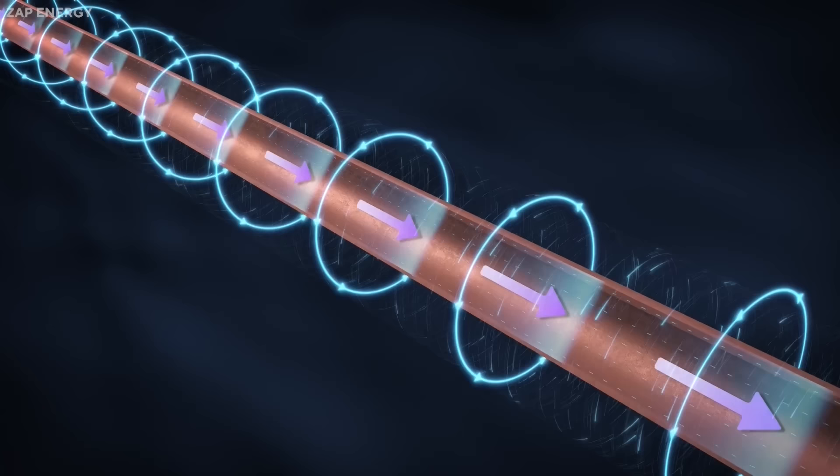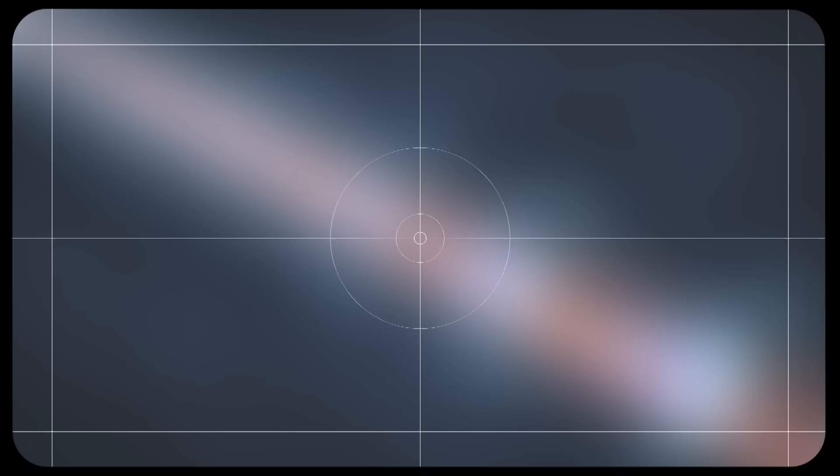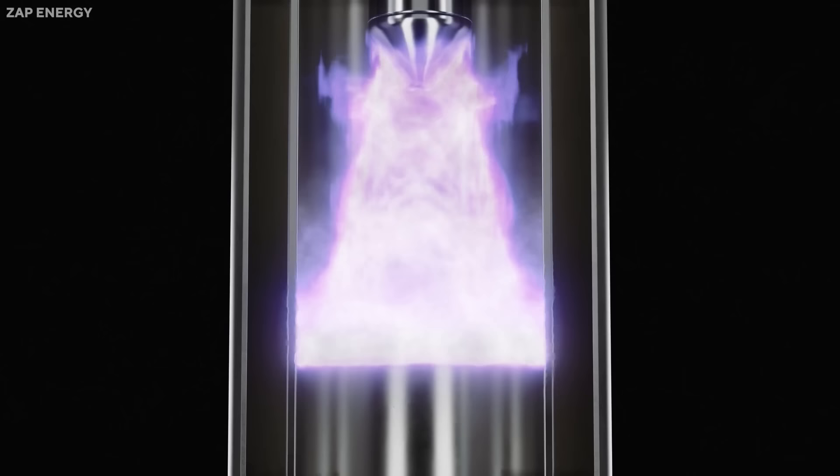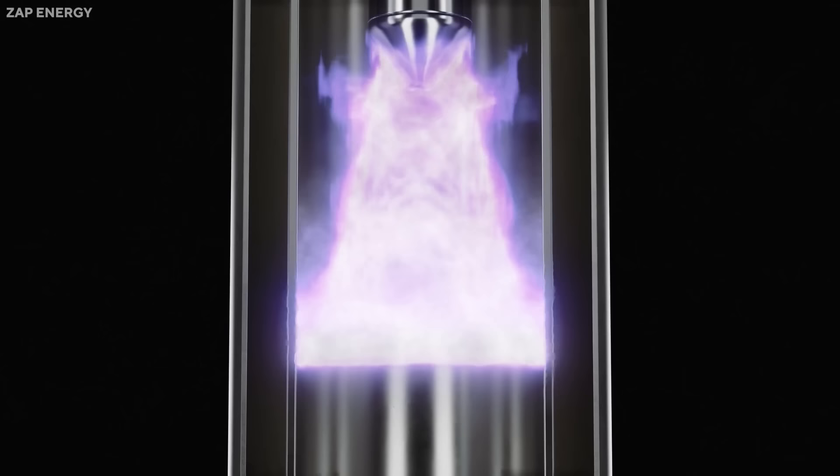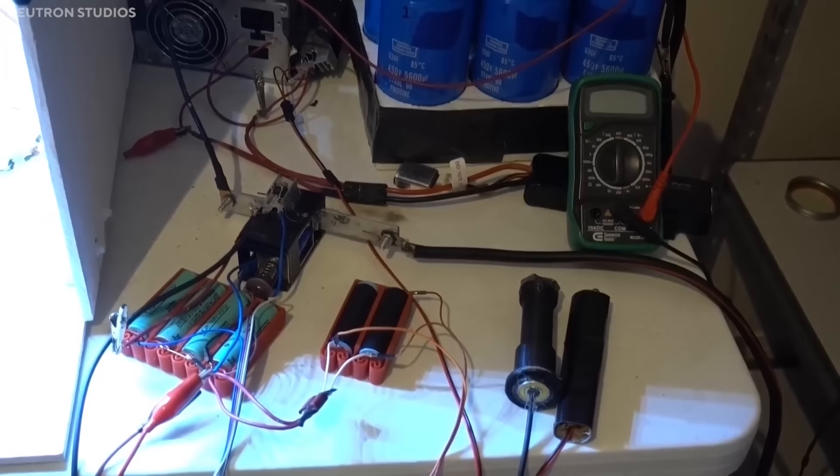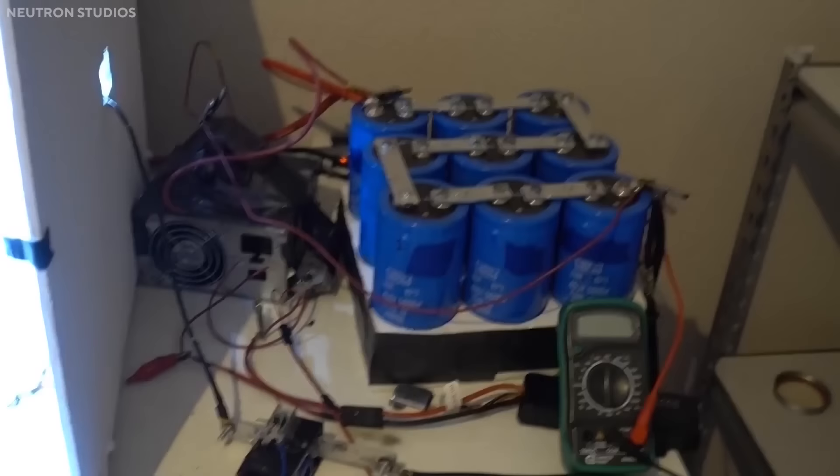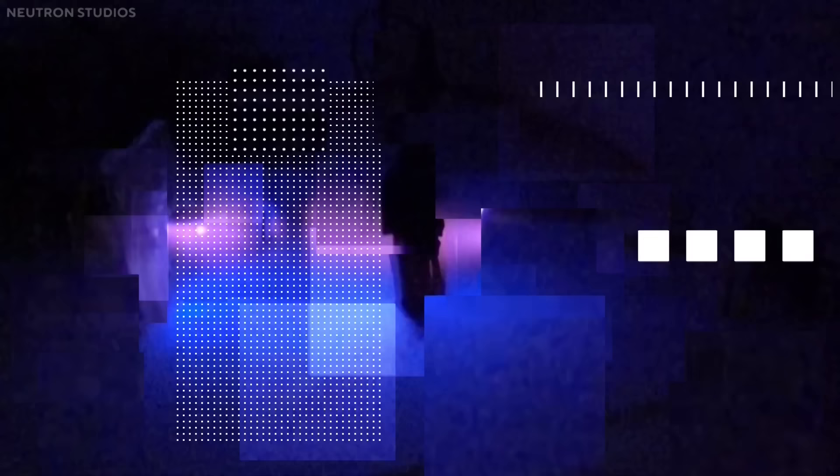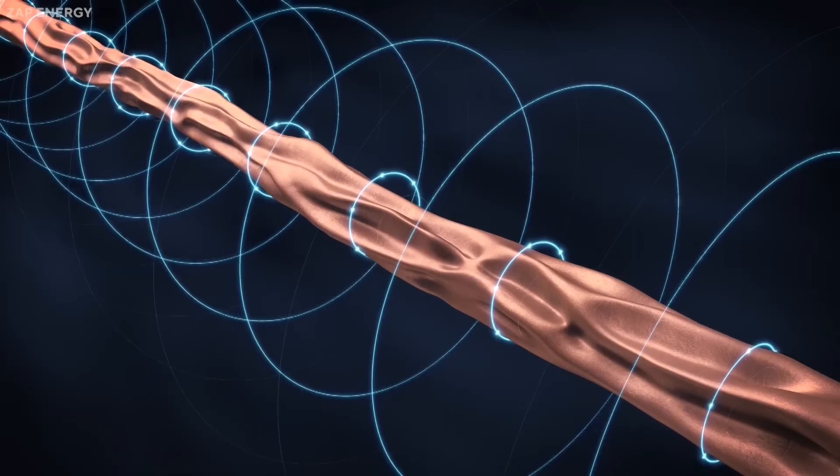Another innovative design for inertial confinement is the Z-pinch. A Z-pinch is a device that uses a strong electric current to generate a magnetic field that compresses a plasma column or Z-pinch along its axis. The plasma column can be formed by a thin wire array, a gas puff, or a liquid jet, and can be driven by a pulsed power generator or a capacitor bank. The Z-pinch can create high temperatures and densities and can also act as a source of X-rays, neutrons, or ions.